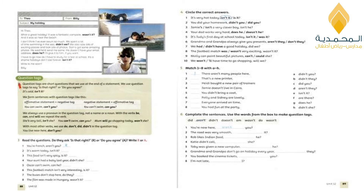For example: 'You can swim' — this sentence is affirmative, so the question tag is negative: can't you? And if the sentence is originally negative, like 'you can't swim,' the affirmative tag is: can you? We always use a pronoun in the question tag, not a name or noun, with the verbs be, can, and will, and we repeat the verb. For example: 'She is very tall, isn't she?' 'You can't swim, can you?' 'Mom will go shopping today, won't she?' With most other verbs, we use do, don't, did, and didn't. Like: 'You live near here' — simple present — so we use 'don't you?'